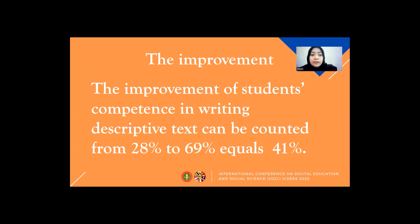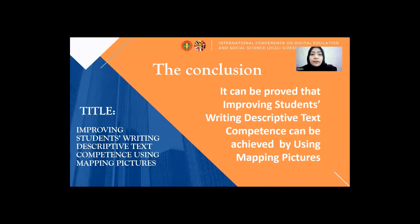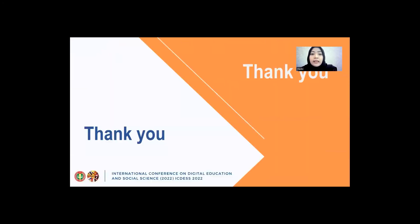For the improvement, the improvement of students' competence in writing descriptive text can be counted from 28% to 69%, equal to 41%. The conclusion is: it can be proved that improving students' writing descriptive text competence can be achieved by using mapping pictures. Thank you.